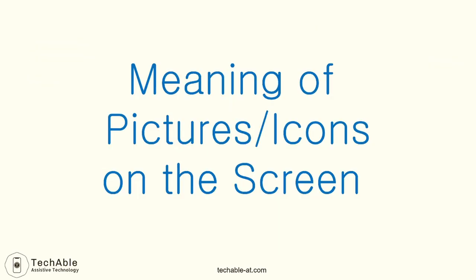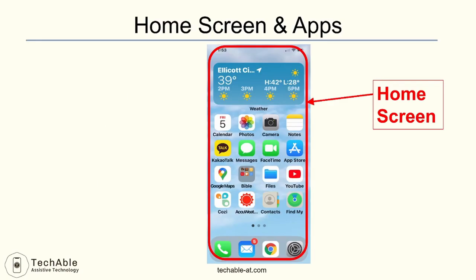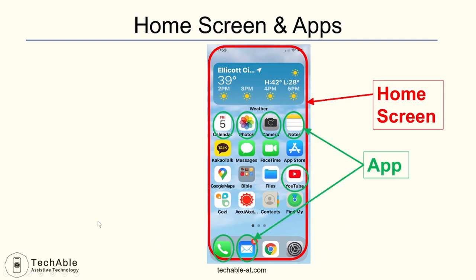Let's learn what the various pictures and icons on your smartphone screen mean. When you turn on your smartphone, the first thing you see is the home screen. Each of these presented as a square icon on the screen — the phone, calendar, camera, YouTube, and so on — is called an app.